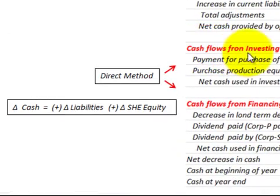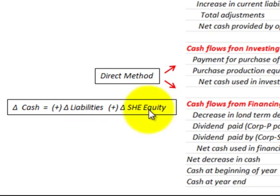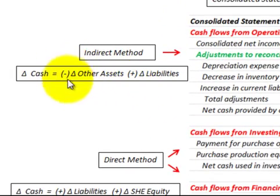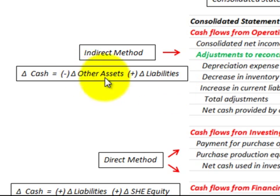Moving down to cash flows for investing and financing activities, that uses the direct method, as shown in the equation: any positive increase in a liability, we add it; any negative decrease, we subtract it. The same for stockholders' equity — any positive increase, we add it; any negative change, we subtract it. Just remember one thing: everything works in the same direction except for other assets — a plus change means we subtract it, and a minus change means we add it.